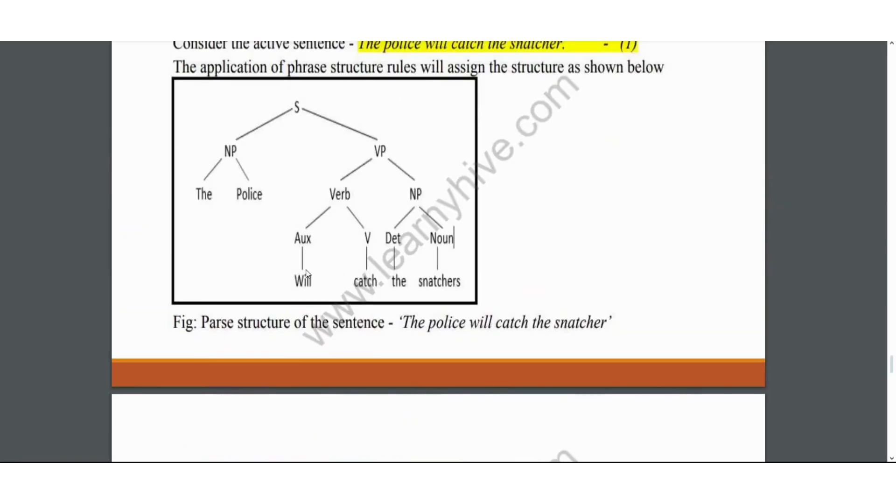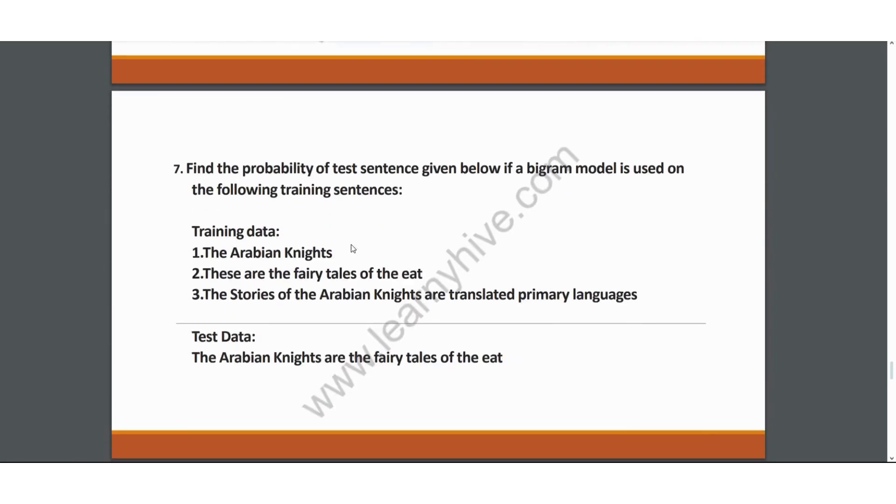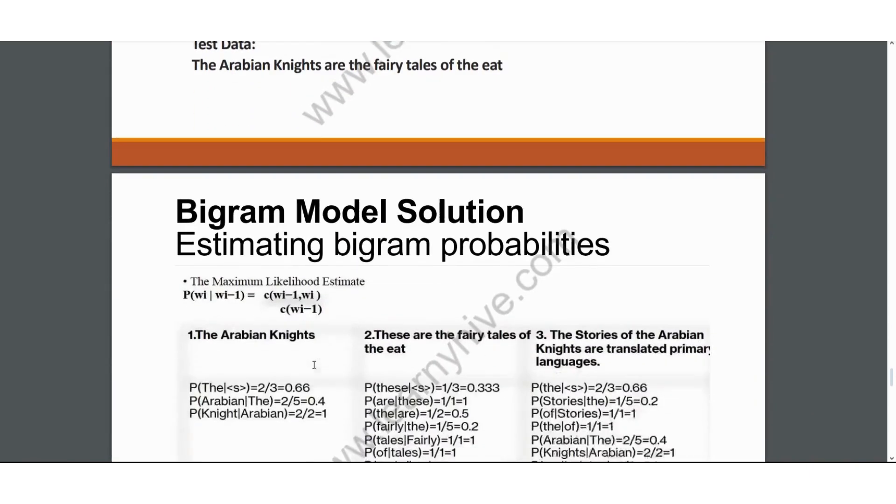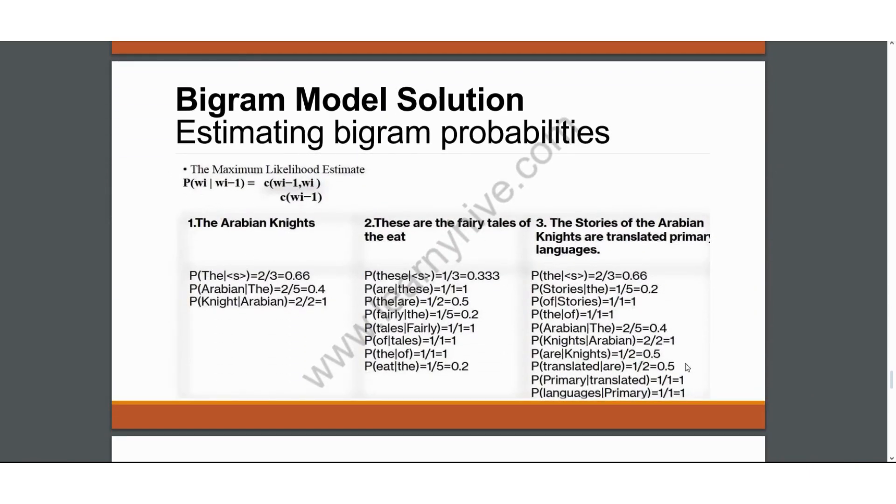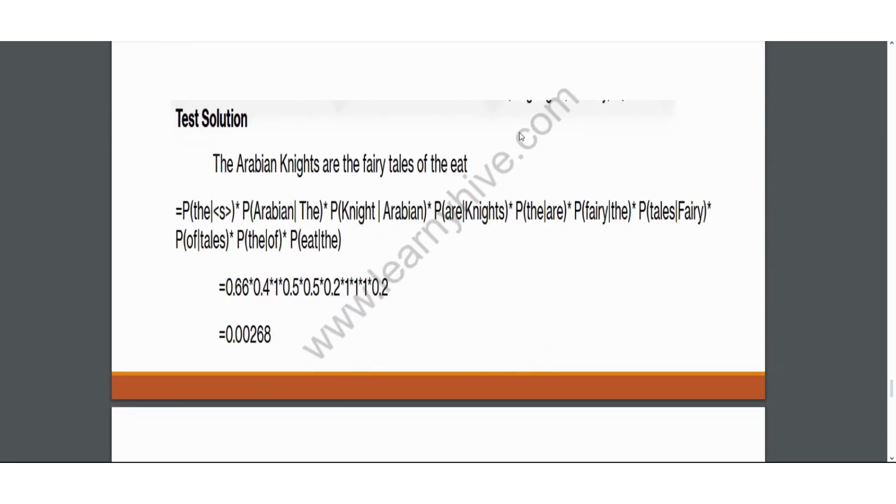Question number seven: Find the probability of test sentence given below if a bigram model is used on the following training sentences. So these are the training sentences. You need to calculate the probability of test. So again, the rules of calculating the probability of test is explained by our VTU faculty. You can access our course by clicking on the link in the description below where you will be able to understand how this is done.